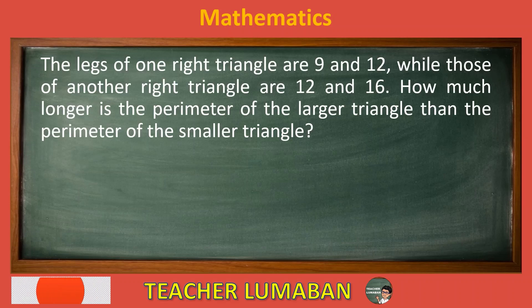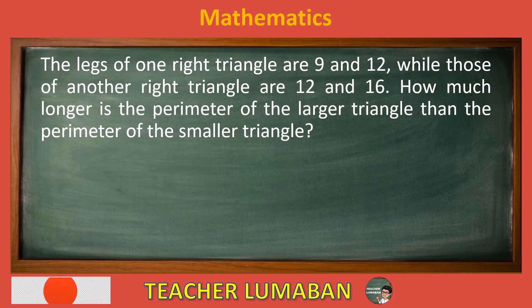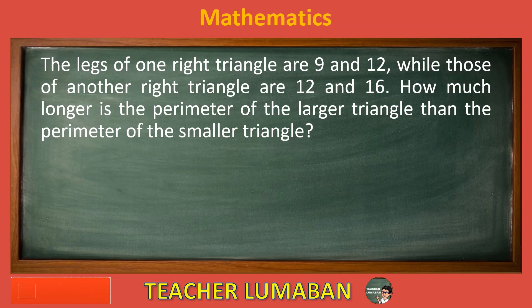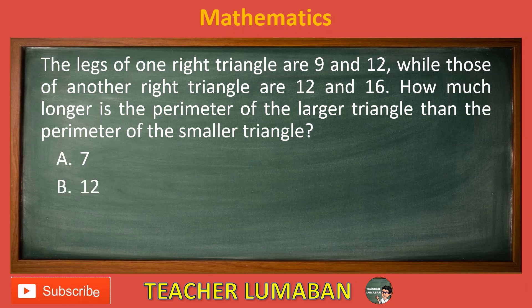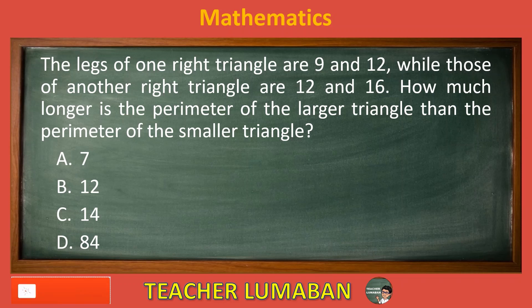The legs of one right triangle are 9 and 12, while those of another right triangle are 12 and 16. How much longer is the perimeter of the larger triangle than the perimeter of the smaller triangle? Letter A: 7. Letter B: 12. Letter C: 14. Letter D: 84. Choose the suitable answer based on the given choices in 5 seconds.